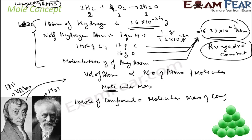That means 1 mole of carbon is equal to 12 grams of carbon. 1 mole of oxygen is equal to 16 grams of oxygen. So this reaction, instead of saying 2 molecules of hydrogen reacts with 1 molecule of oxygen, you can also say 2 moles of hydrogen reacts with 1 mole of oxygen to give 2 moles of water. And we know that 2 moles of hydrogen is 2 grams, and 1 mole of oxygen is 16 grams. The relation between mole and molecular mass is something we now know.